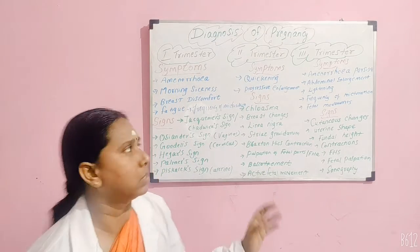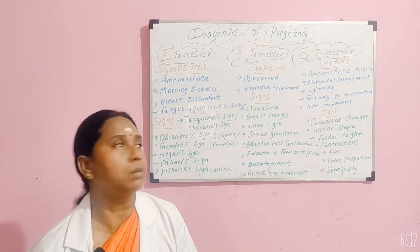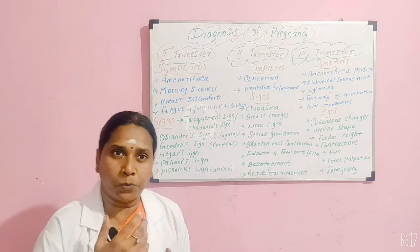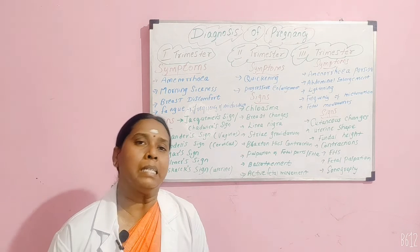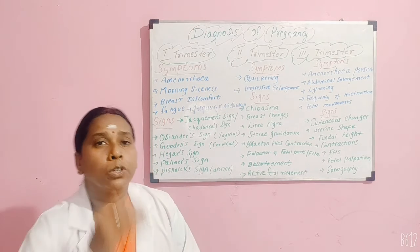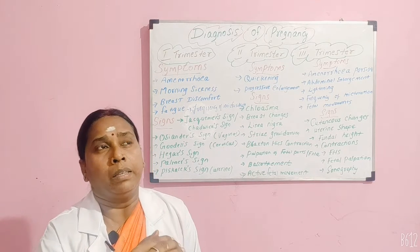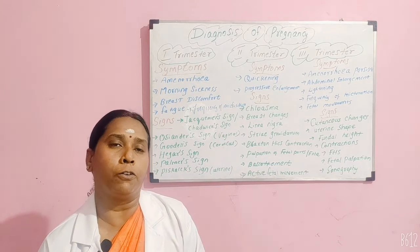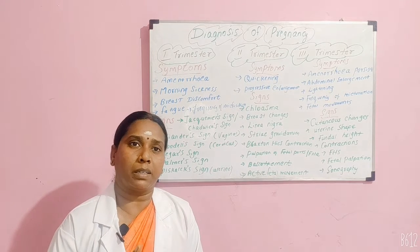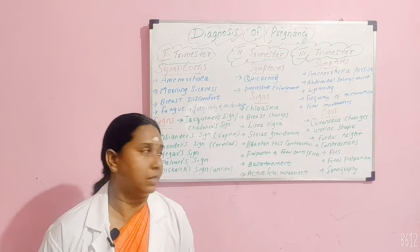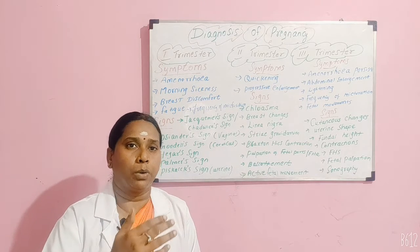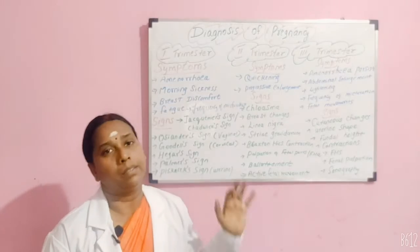Moving to the second trimester, the first symptom is quickening — the mother's feeling of liveliness, where she can feel something alive moving inside her tummy, indicating the child is alive and moving inside the uterus. This is usually felt around the 18th week and is more familiar to a multigravida mother than a primigravida, as she is used to the sensation from a previous pregnancy. Then comes progressive enlargement of the uterus: as the fetus grows, the uterus grows in height, indicating pregnancy.